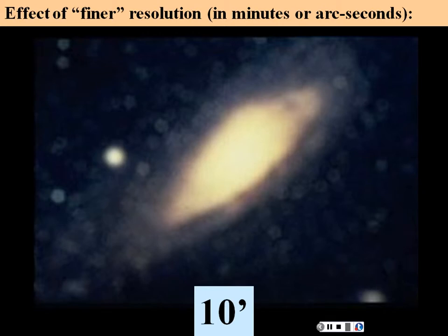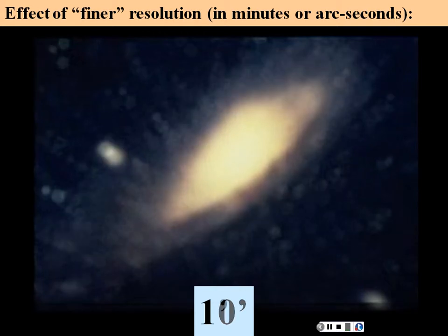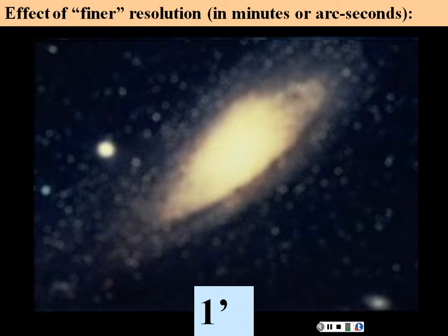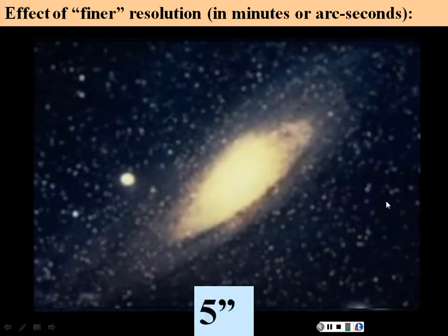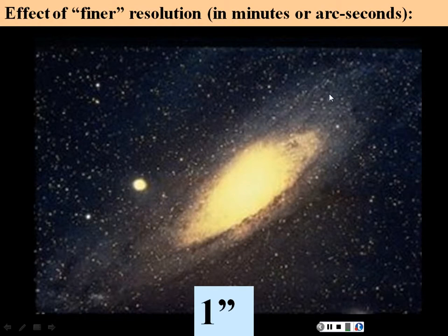Here's the effect of finer resolution. At 10 arc-minutes resolution we see very little. Decreasing to one arc-minute, some objects begin to distinguish themselves. At five arc-seconds we see many bright objects we couldn't see before. Down to one arc-second, we can discern many more individual stars in a galaxy.